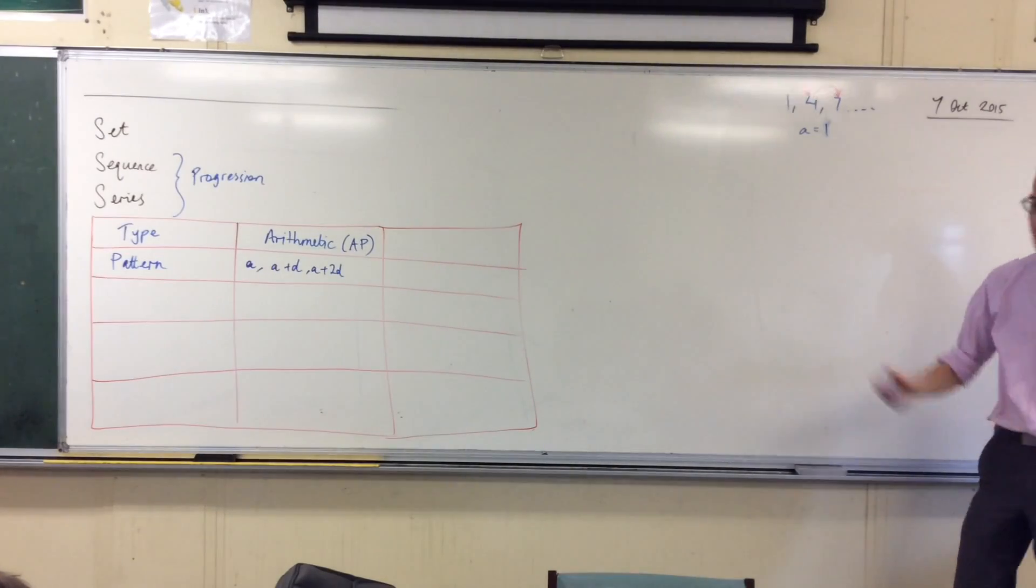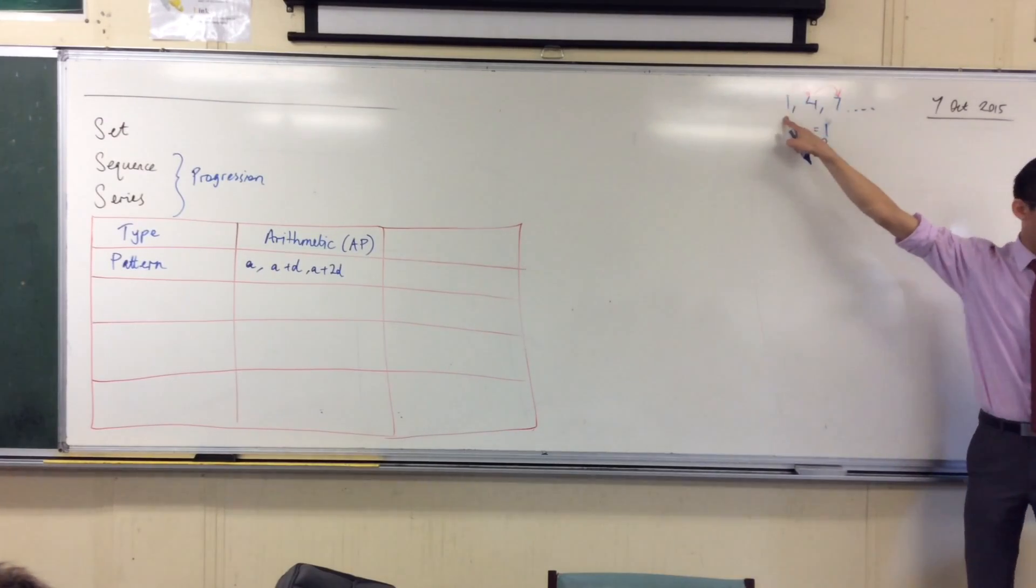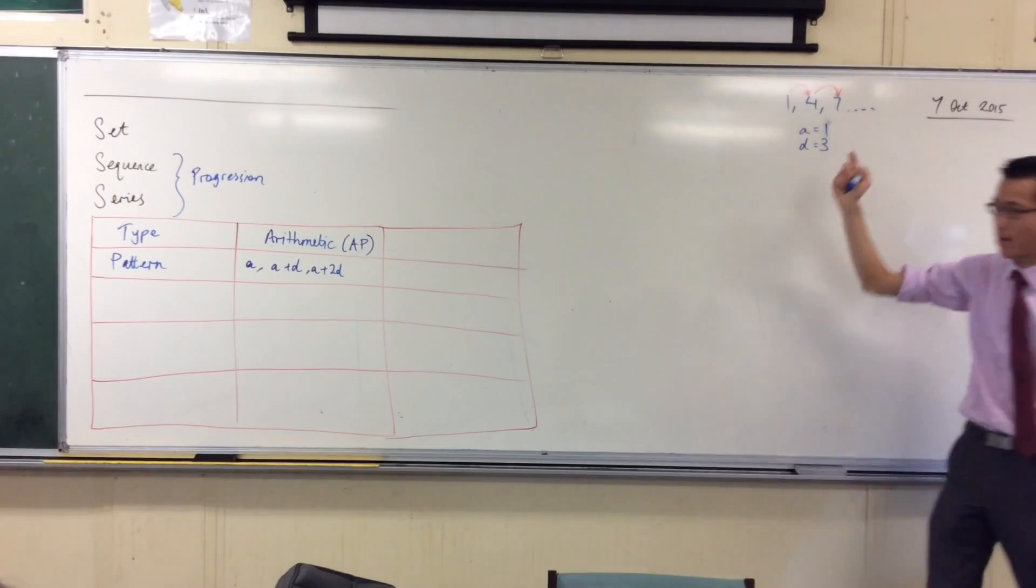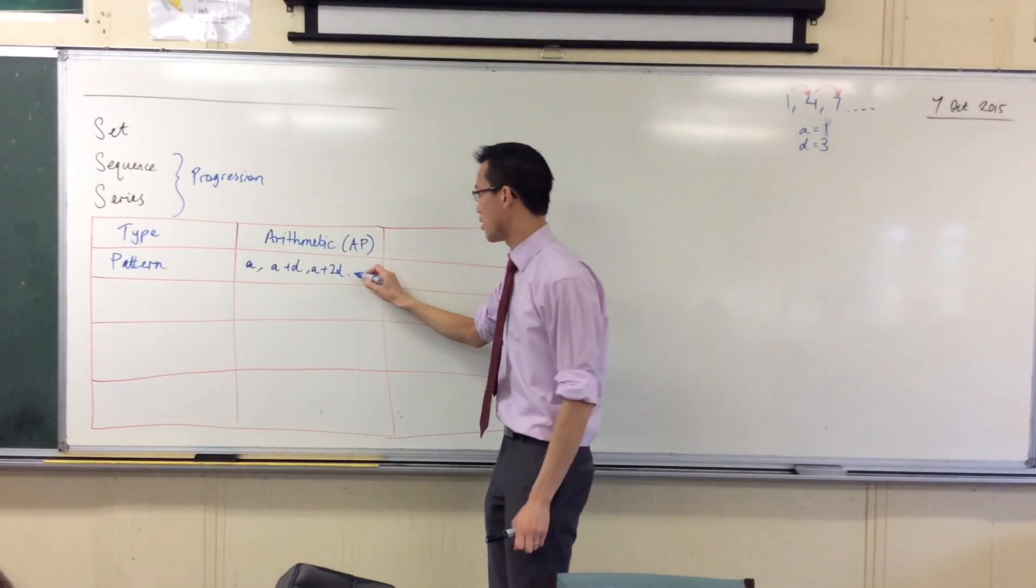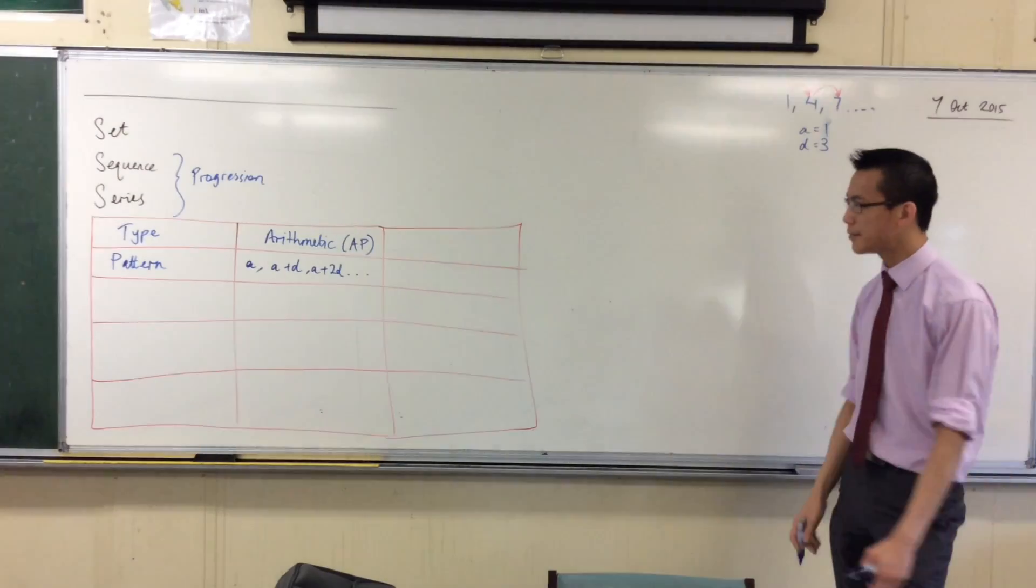And I have a common difference of three. And sure enough, there's your A equals one, there's A plus D, and there's A plus 2D, because one plus six. And dot, dot, dot, I don't need to know anymore, I have the pattern established. Okay, perfect.